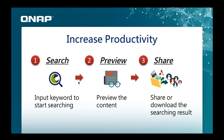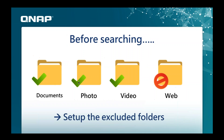When you put in a word for the search and it gives you results, you have the option to preview the file, share it, download it, or find out where the file is located on the NAS. You can also exclude certain folders from the search — for example, exclude the web folder — and QSearch will only search the folders you have included.